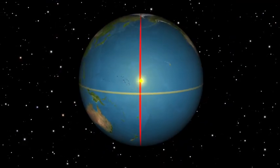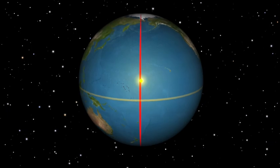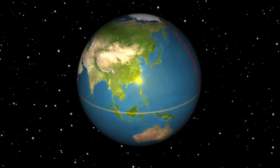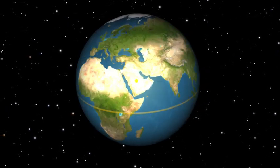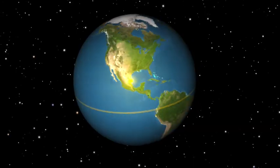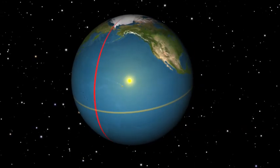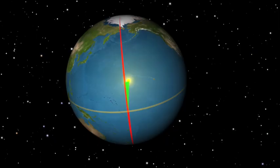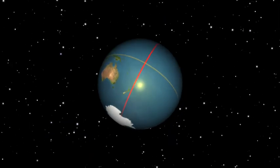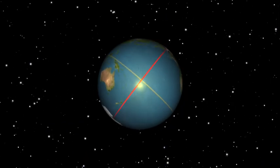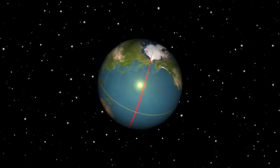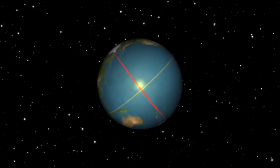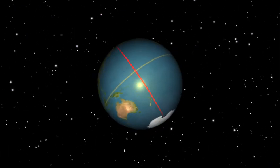Second, because the Earth is tilted on its axis, the little extra rotation to get from noon to noon is largest at the solstices and smallest at the equinoxes. So solar days grow progressively longer as we move from the equinox — March and September — to solstice, June and December.